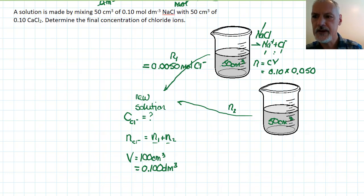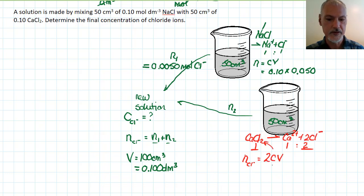Now my second beaker is a little bit different. This material down here is calcium chloride. We saw it earlier. It will break into calcium ions and 2 chlorine ions, the ratio here being 1 to 1 to 2. So every one of these will produce 2 chloride ions. So my number of moles of chloride ions is going to be 2 times the concentration and volume of this solution.